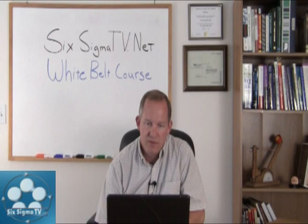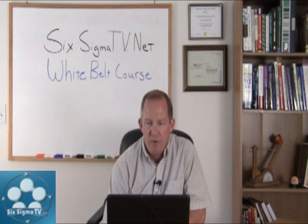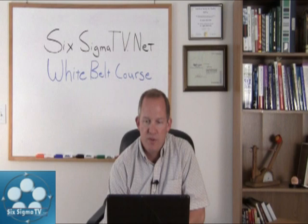First thing we'll do is create a measurement plan to measure current process performance in relation to each of the CTCs. We're going to analyze the methods of measurement to ensure data collected are accurate and reliable — are we all collecting the same measurement, do we all have the same definitions, etc. Then we're going to collect the measurement data. The measurement phase results in a clearly defined and tested plan to collect data that accurately reflects and represents the process.